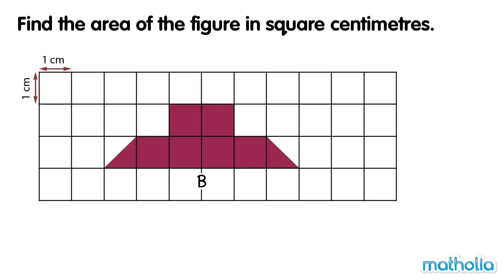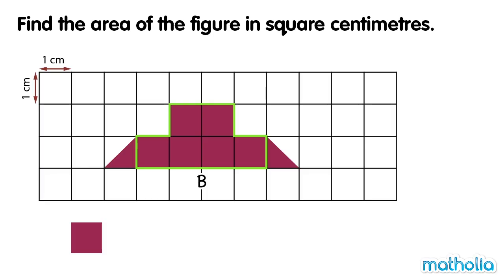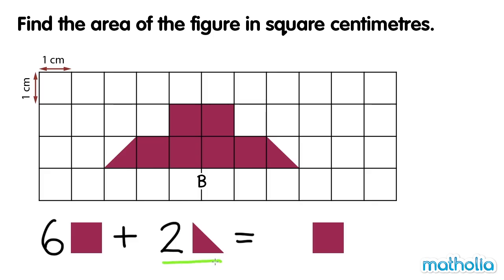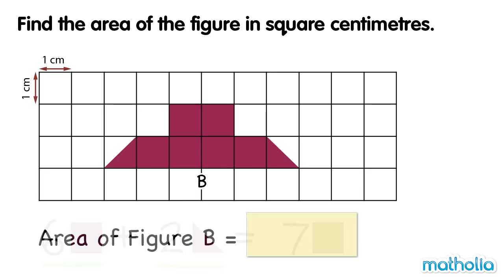Figure B is made up of whole grid squares and half grid squares. To find the area, we add all of the squares together. There are six whole squares and two half squares. Two halves is equal to one. Six squares plus one square is equal to seven squares. So the total area is equal to seven squares. The area of figure B is equal to seven square centimetres.